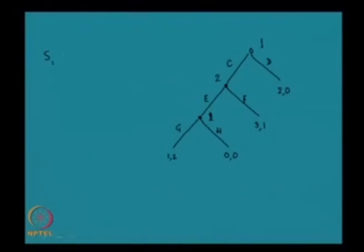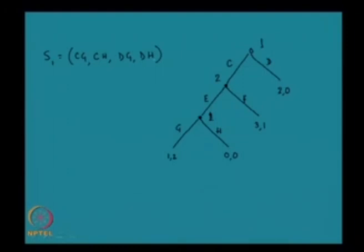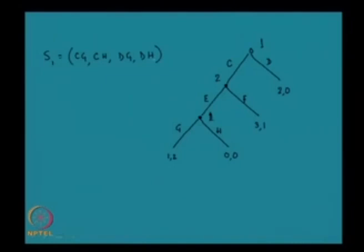Now suppose we want to find out the Nash equilibria in this game. First, I shall find the strategy set of player one. The strategy set of player one consists of four strategies: CG, meaning in the first stage he takes action C, and if the history is CE he takes action G; CH, meaning action C then action H; and DG and DH, where in the first stage he takes action D and specifies his action for the history CE — even though D rules that out.